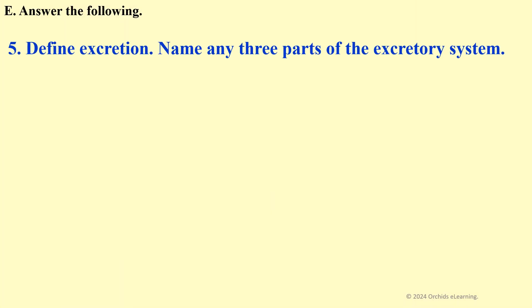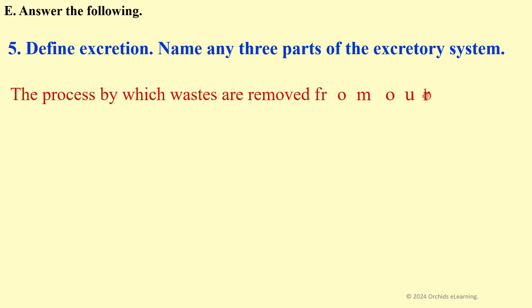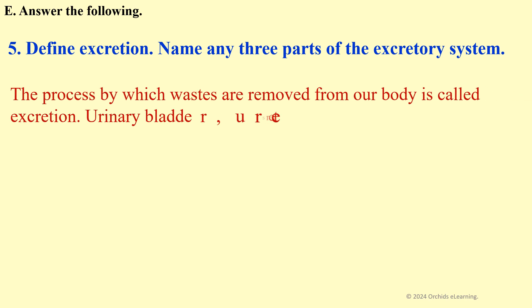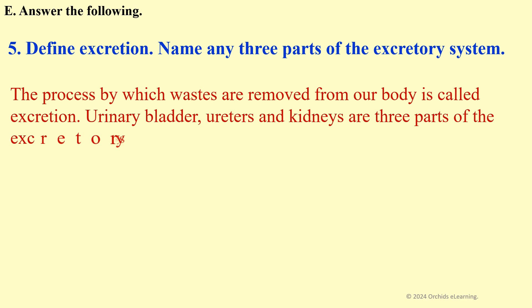Define excretion and name any three parts of the excretory system. The process by which wastes are removed from our body is called excretion. Urinary bladder, ureters, and kidneys are three parts of the excretory system.